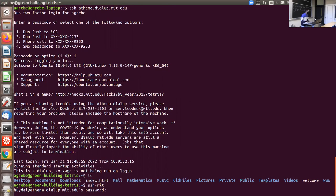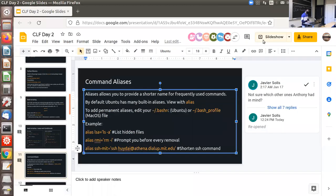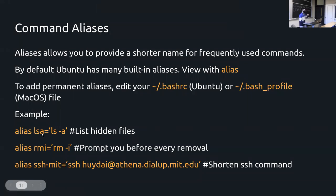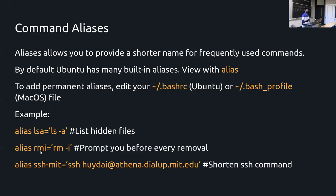Other alias examples include 'alias lsa="ls -a"' to show hidden files without remembering the flag. You can also alias 'rm' to 'rm -i', which prompts you to confirm before removing, making removal safer. You can enter aliases directly into your terminal, but they'll only be active for that session — editing the bashrc or bash_profile file makes them permanent so every time you open a terminal, they're set automatically.